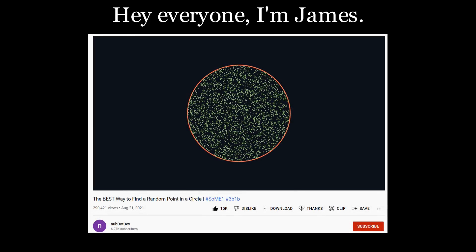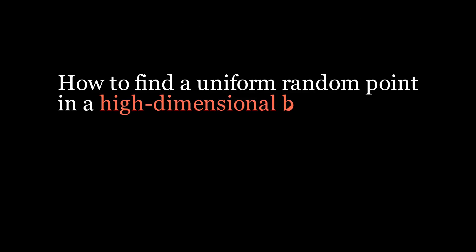One of the videos from last year that caught my attention was 'The Best Way to Find a Random Point in a Circle' by Justin. Coincidentally, two of the courses I took at university this year mentioned higher dimensional volumes and geometry. So in this video, I'm going to extend Justin's results and talk about how to find a uniform random point in a high dimensional ball. As you will see, the results in higher dimensions are quite different from those in two dimensions.